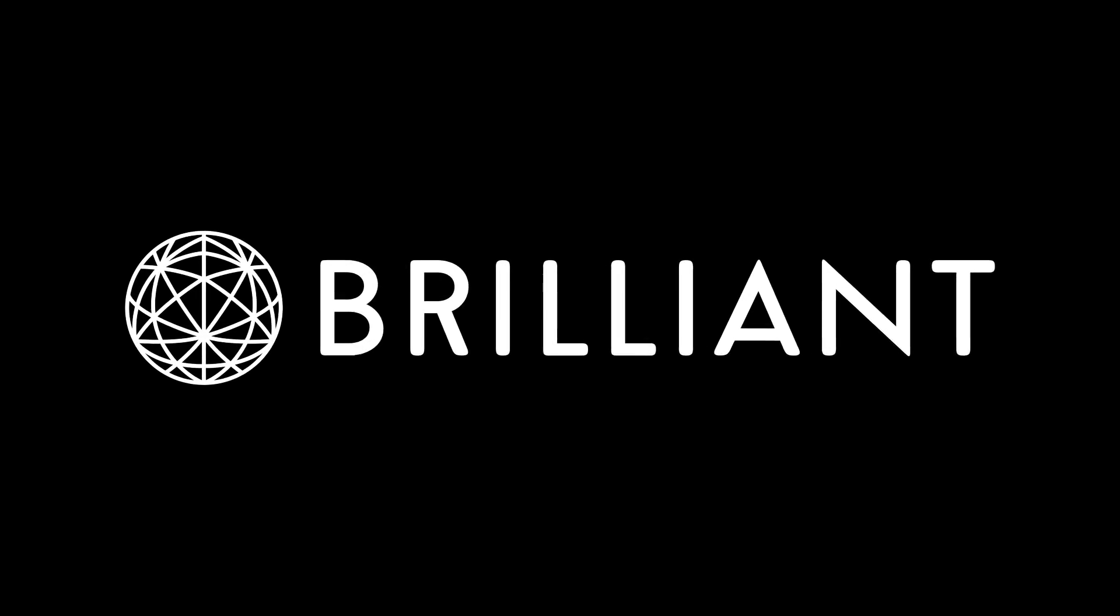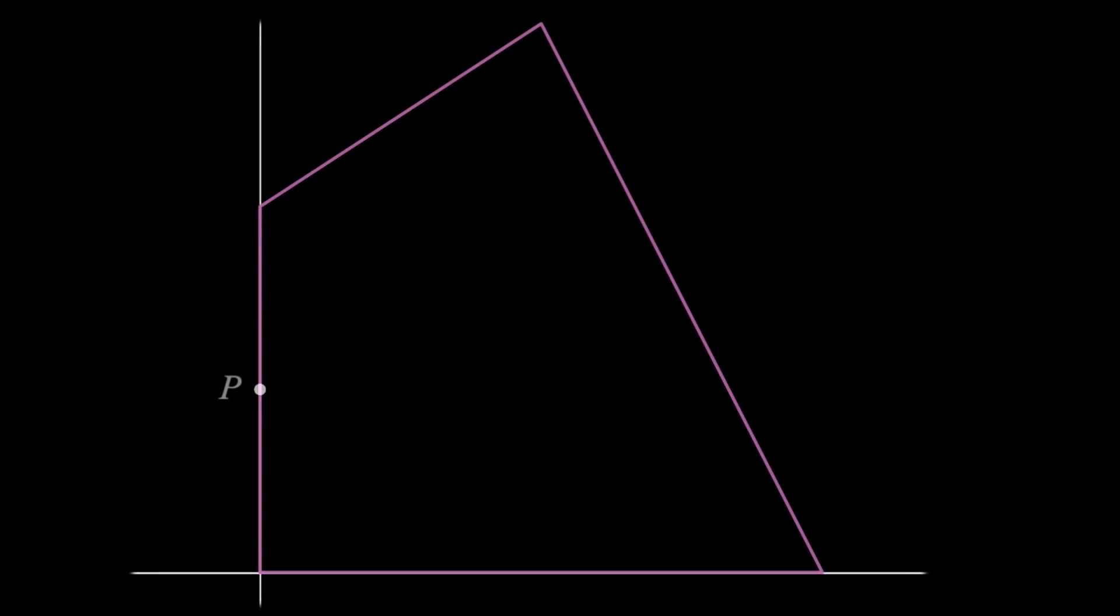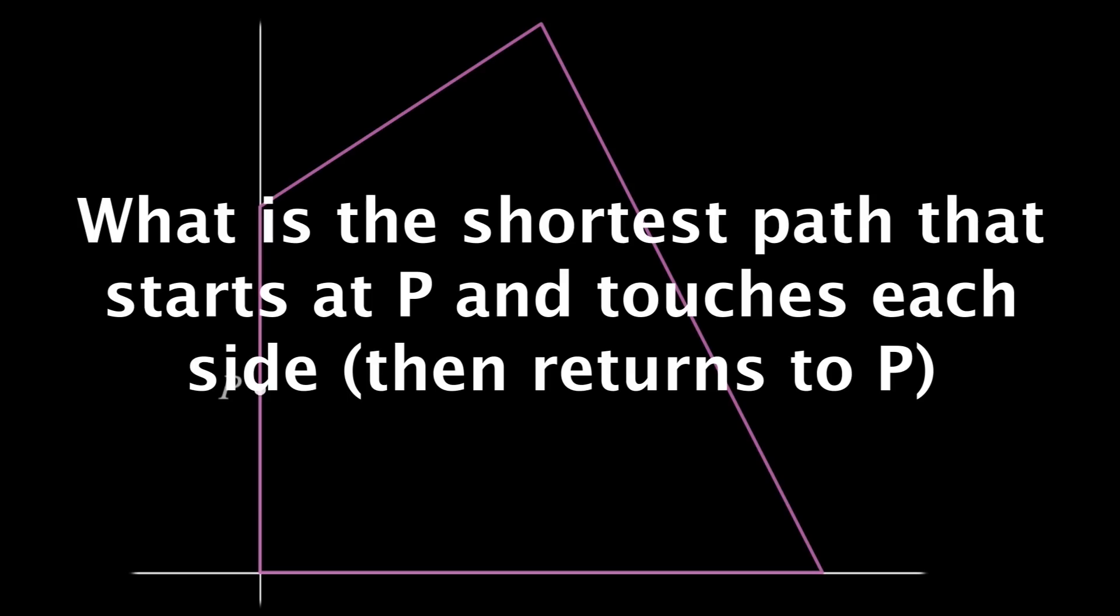This video was sponsored by Brilliant. Imagine we have some arbitrary polygon and a starting point P. The question is, what is the shortest path that starts at point P, touches all sides, and then comes back to the starting location?